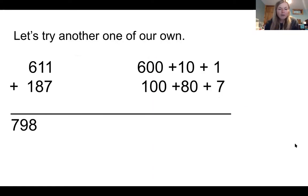Let's try another one of our own. 611, 600 plus 10 plus 1. I know that that's how I write it out in expanded form because there are six 100s equaling 600, 1 10 equaling 10, and 1 1. Altogether that equals 611. I did the same thing for my 187. I got the total of 798 for my answer. But let's think about how I did that.